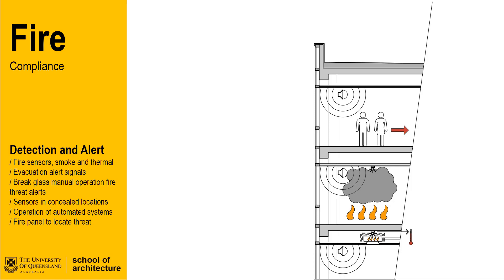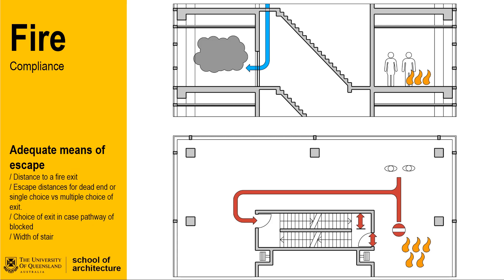Once a threat has been detected, the primary aim is occupant safety. The provision of a safe and adequate means of escape, particularly for tall buildings, is a key consideration. Access to a fire-isolated stair is key to removing occupants from a potential hazard. The proximity, number and width of stairs is determined by building class and deemed-to-satisfy requirements that are spelled out in the NCC.